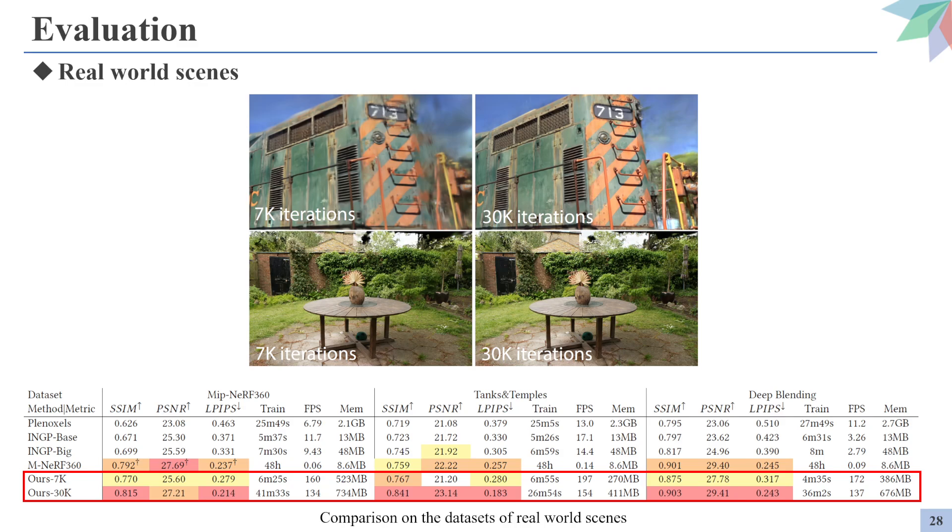And the following sections provide the evaluations on the performance of 3D Gaussian Splatting. For real-world scenes, the 3D Gaussian Splatting outperforms all the comparison targets, even with the 3D Gaussian Splatting version optimized for 7,000 iterations instead of full 30,000.